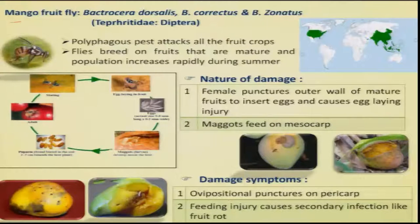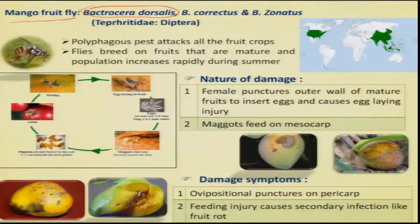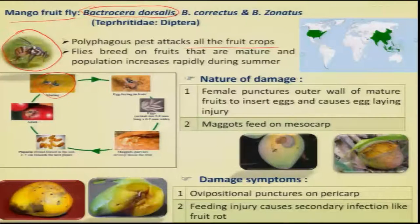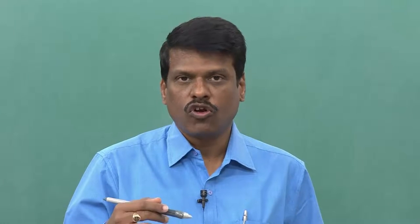The mango fruit fly has two to three species, among which Bactrocera dorsalis is quite prominent. It is polyphagous and attacks all types of fruit crops. On mango, this pest is mainly considered a pest of quarantine importance, as many export consignments of mango get rejected due to infestation. The adult fly inserts eggs into developing mango fruits, and the white maggots enter and feed on the mango pulp. For internal marketing and consumption, this is not a major problem.